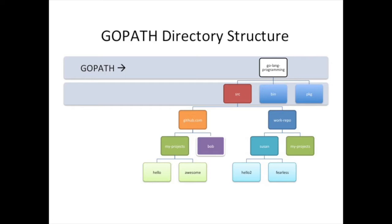This GoLang programming directory is what the GoPath variable needs to point to. First, we create a directory for GoLang programming, then a directory for source. We'll ignore bin and packages since those get created automatically when we start creating and installing GoLang code. Then we create a repository directory — GitHub — since that's the one we'll use. Please create this directory even if you don't have a GitHub account.